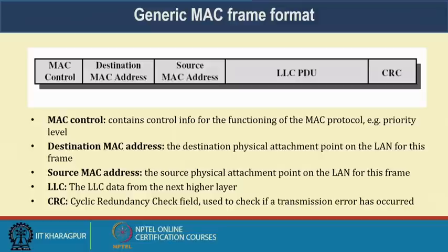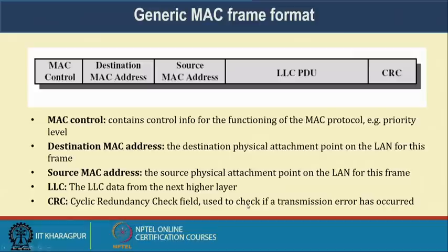Attachment point means where it is connecting to the network interface card. The source MAC address is the source physical attachment point on the LAN. The LLC data is whatever data is received from the next higher layer — that is the LLC PDU. The CRC is the cyclic redundancy check field used to check if a transmission error has occurred at the destination.